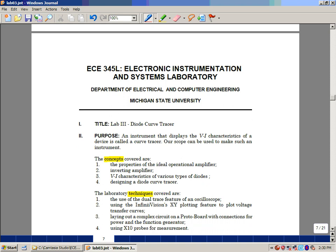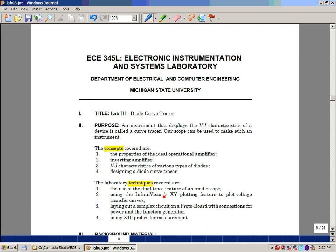The techniques we're going to learn when we do this lab is the dual trace feature of the scope, the XY plotting feature. We're also going to learn how to lay out a fairly complicated circuit on a protoboard, and we're going to use the times 10 probes for measurement. So again, I'd like you to read over this lab. There'll be a quiz next time you come to lab on this video, but also having you read the experiment. And this is lab number three, diode curve tracer.